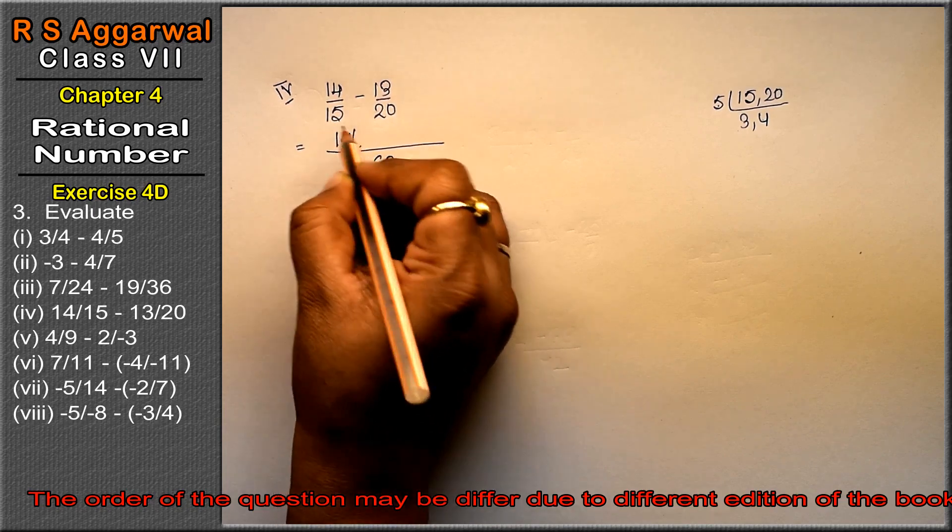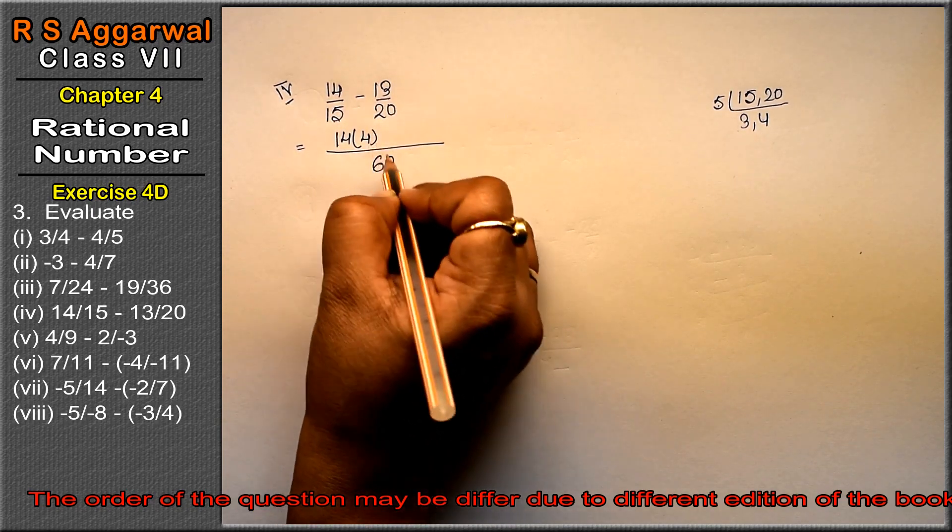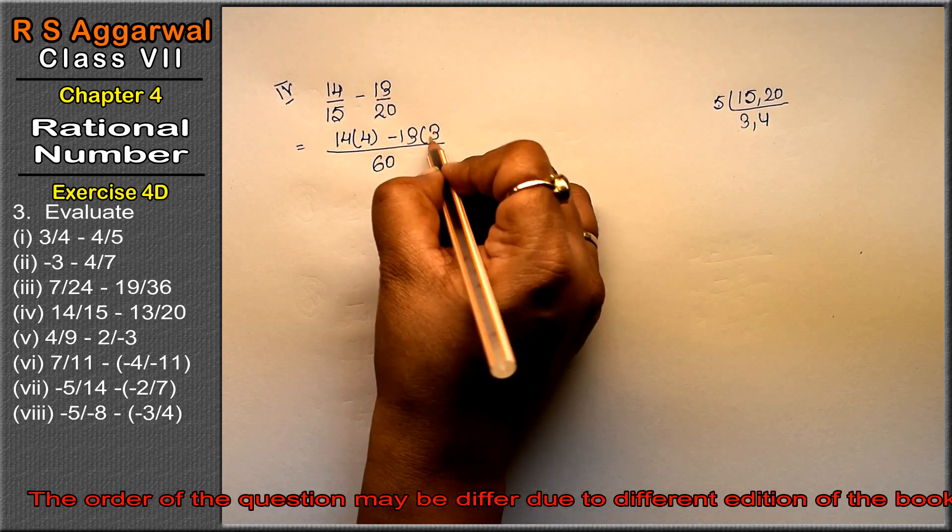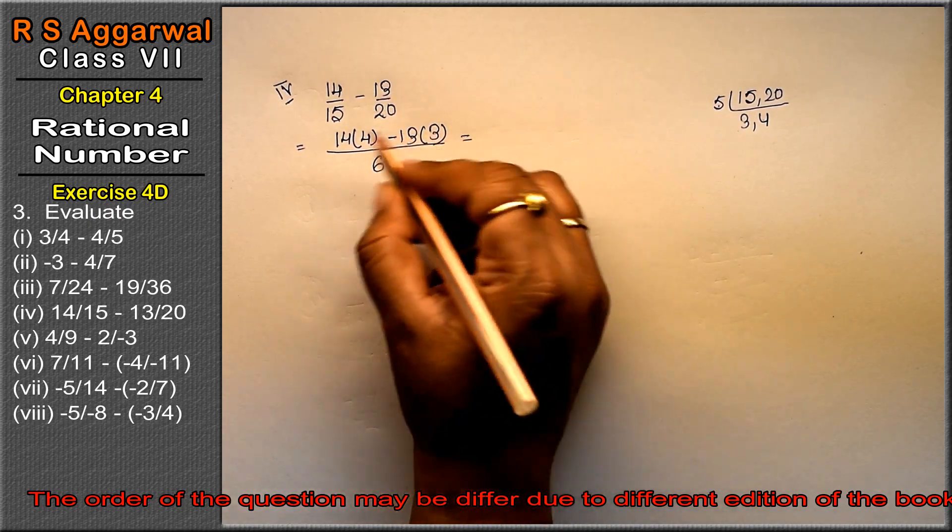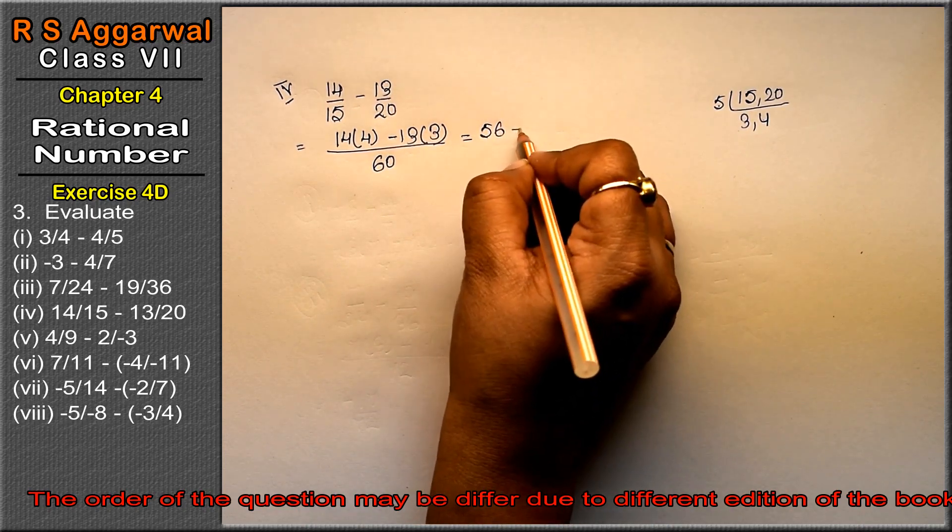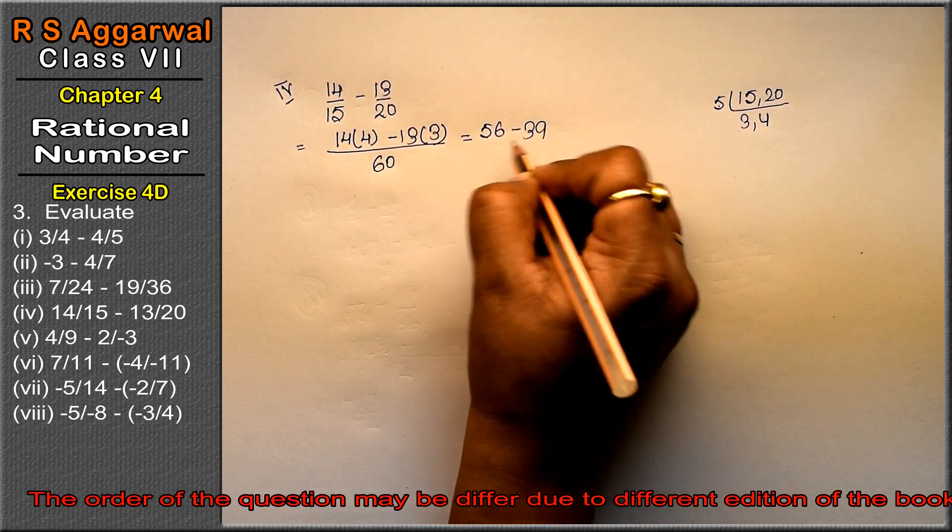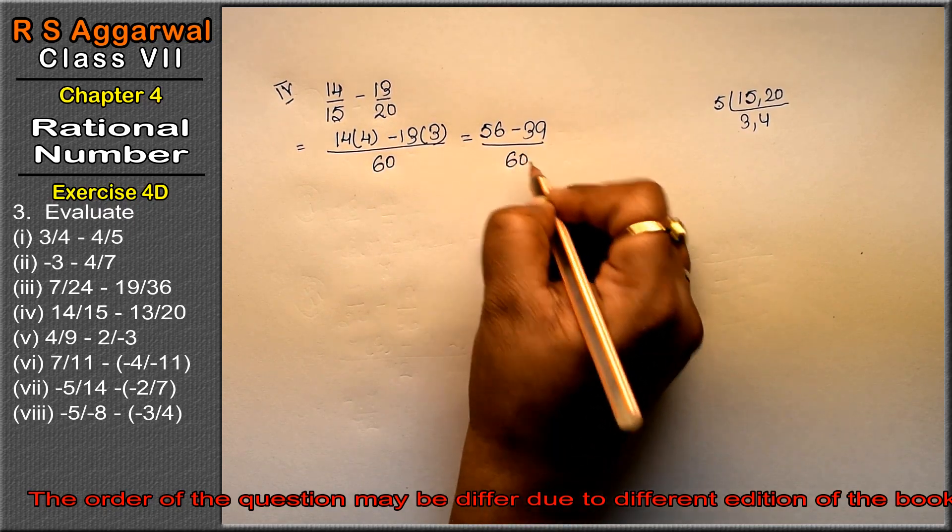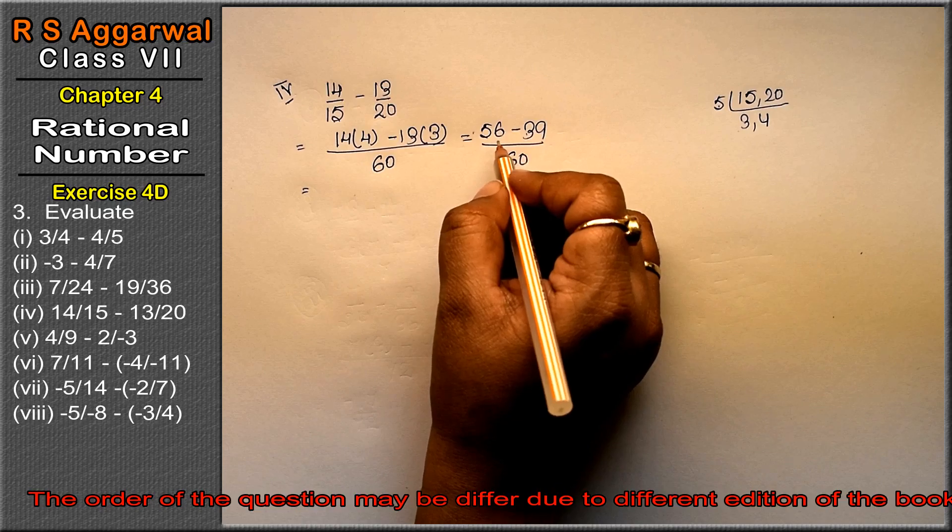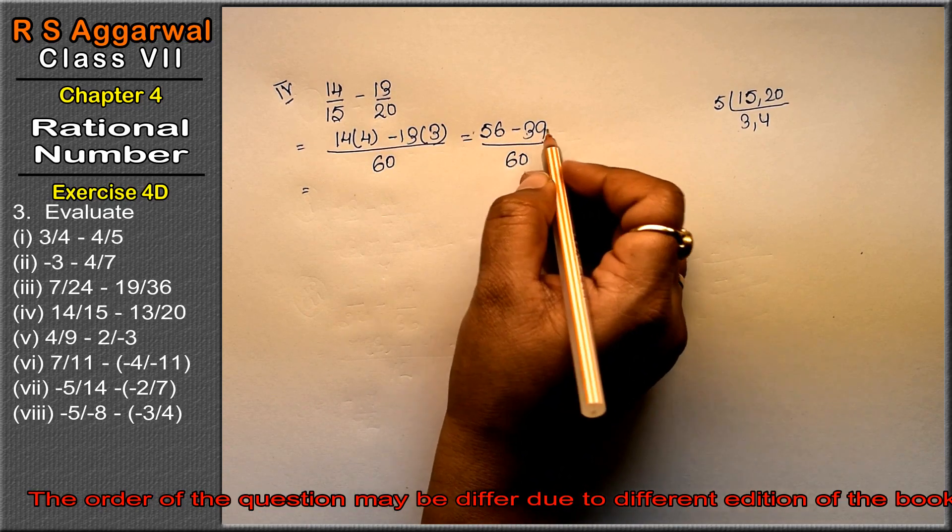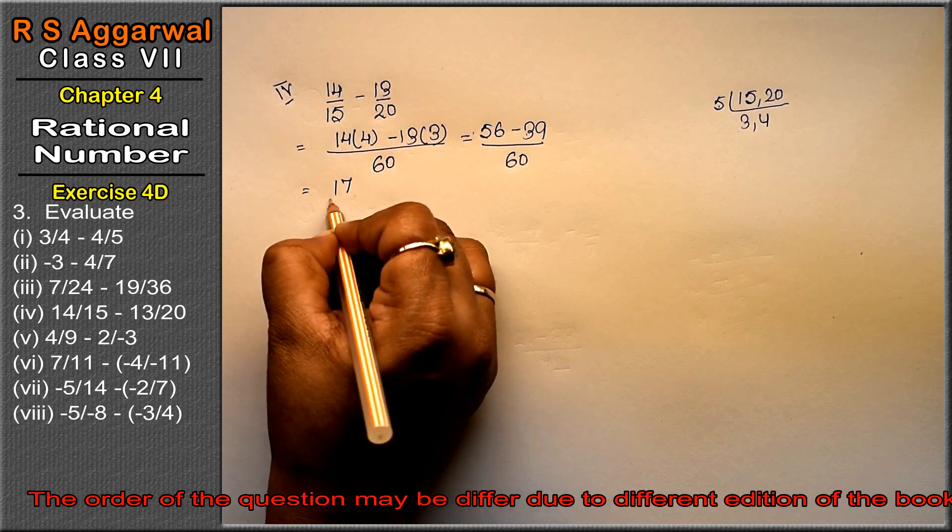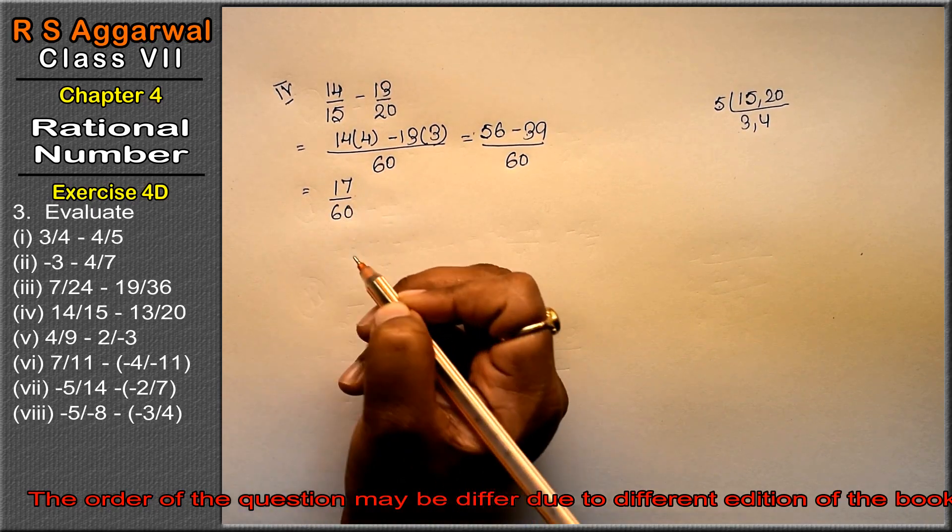Now 14 into 4 is 56, and 13 into 3 is 39, upon 60. Both opposite signs, one plus one minus, so subtract. 56 minus 39 is 17 upon 60 is the answer.